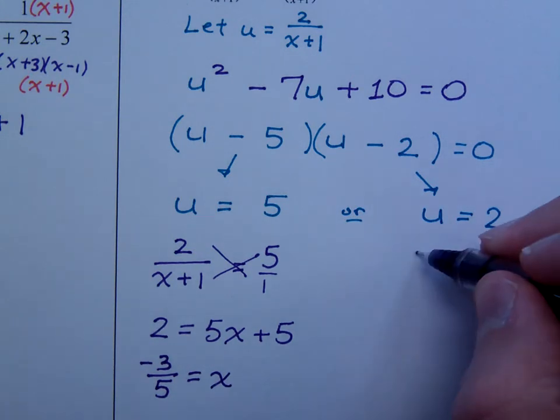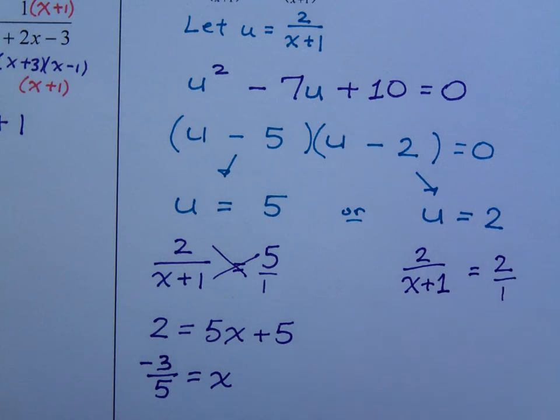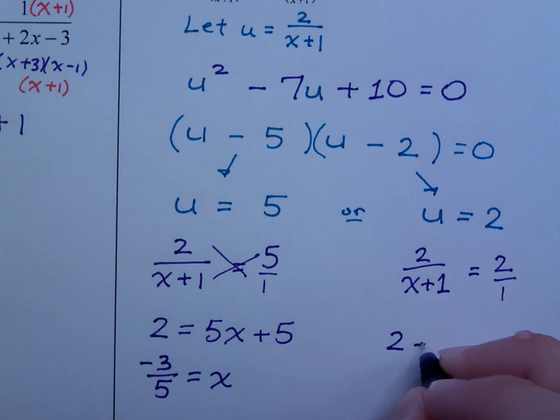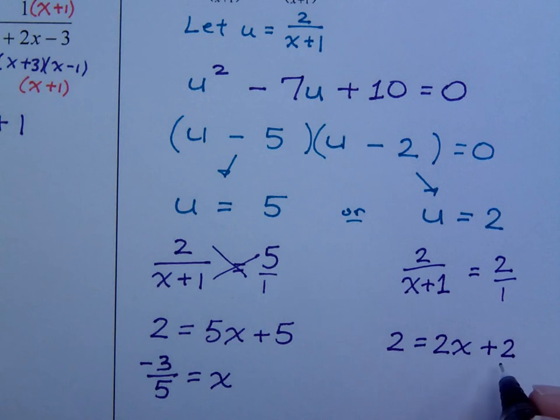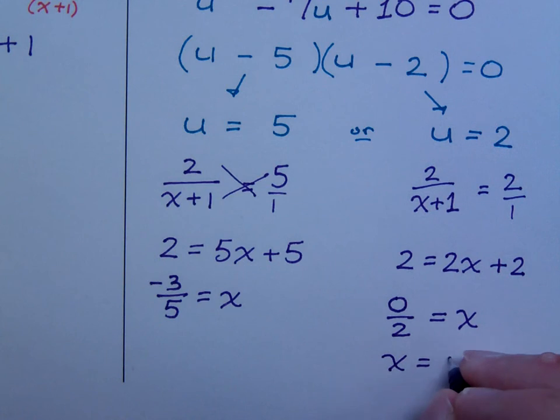Over here, I do the same thing. 2 over x plus 1 is equal to 2 and that's going to be over 1. When I do the cross products, 2 times 1 is 2. Over here, that's 2x plus 2. If I subtract the 2, that gives me 0. 0 divided by 2 is going to be x, because I would subtract the 2 and then divide by 2. But you're not going to leave this as an answer. Really, that's just x is equal to 0.